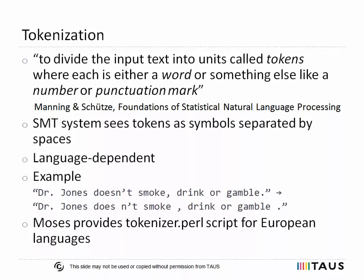Initially, this might sound like a very simple task that can be done using regular expressions. When looking at the example on the slide, however, it becomes clear that this task is more complex. Periods that are part of abbreviations should not be separated from word characters, and these abbreviations are language dependent. Sometimes word concatenations, like the negation "doesn't" here, should be separated. Luckily, Moses provides a tokenizer that contains rules for most European languages.